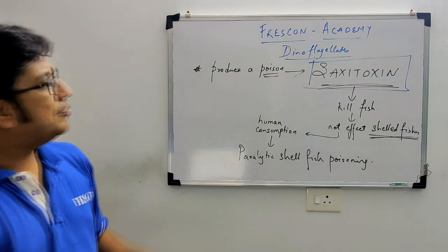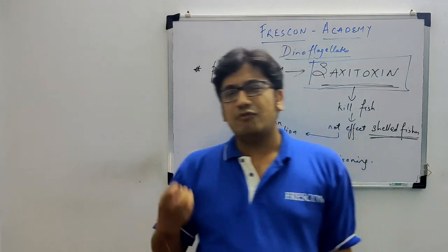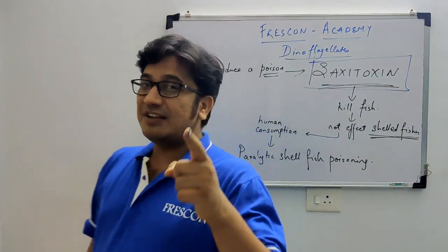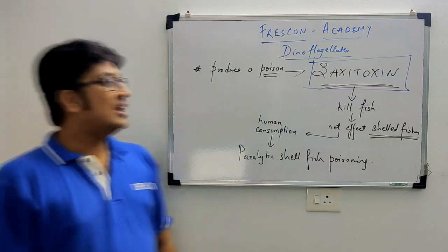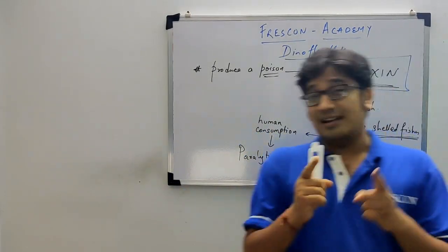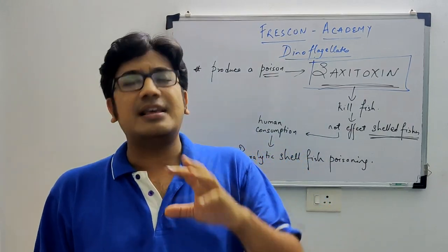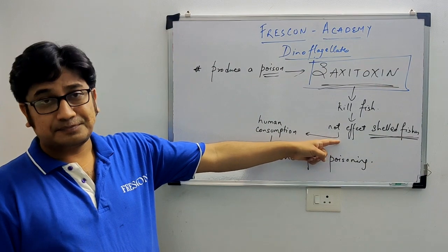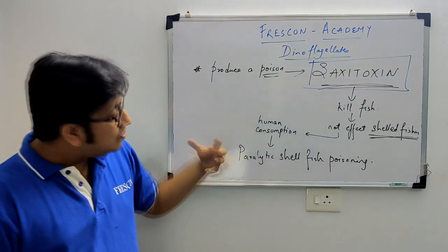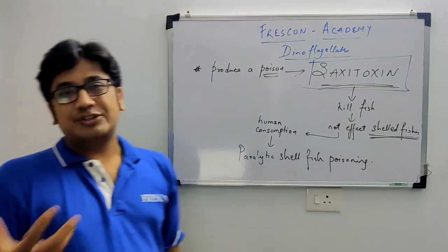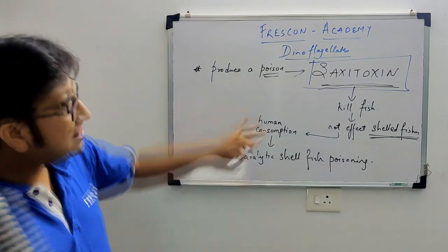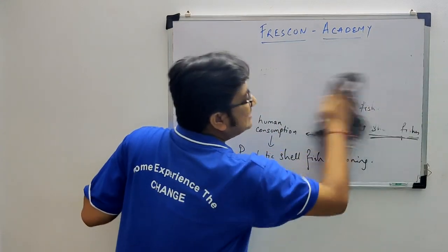So Dinoflagellates are beautiful — Noctiluca shows bioluminescence, Gonyaulax and Gymnodinium make the sea red — but they also produce a dangerous toxin called saxitoxin. This toxin kills marine fish, does not affect shelled fish, but if humans consume those shellfish, they get paralytic shellfish poisoning because the toxin attacks the nerves.